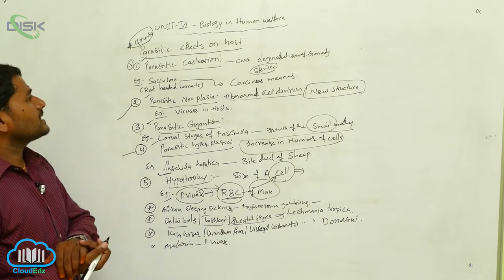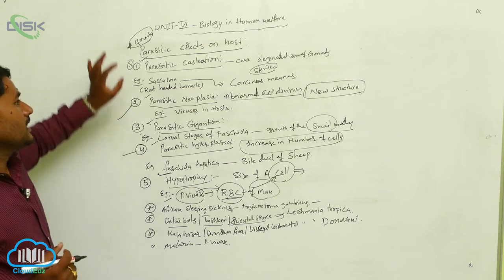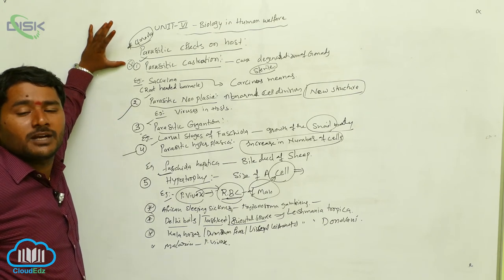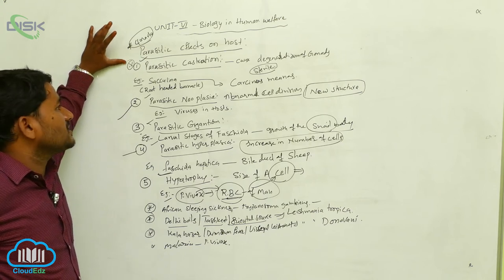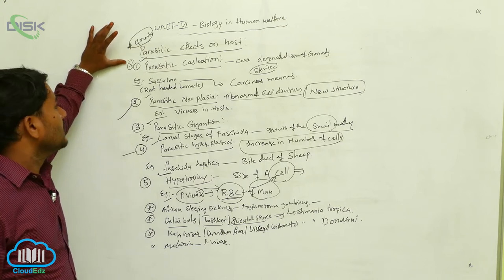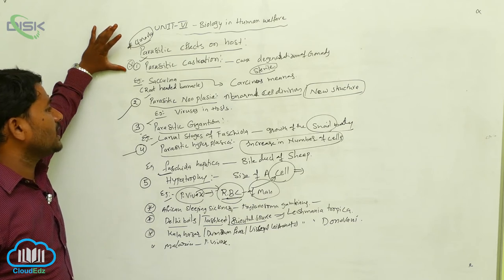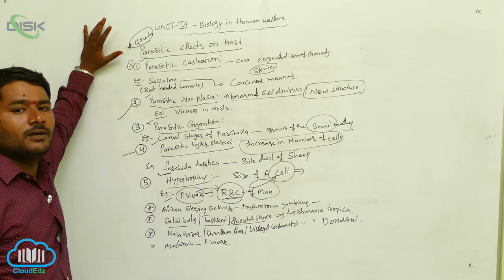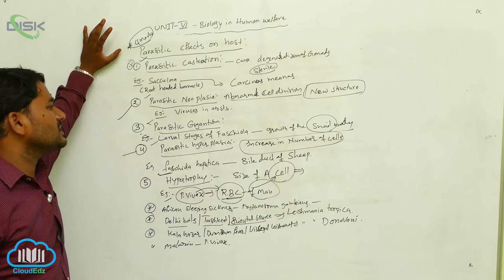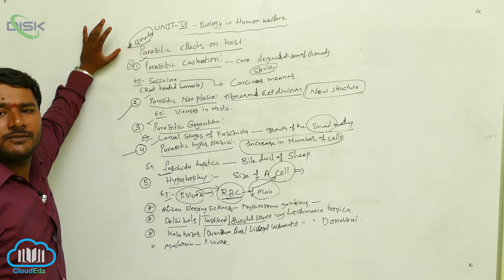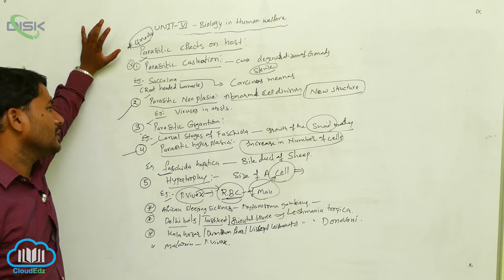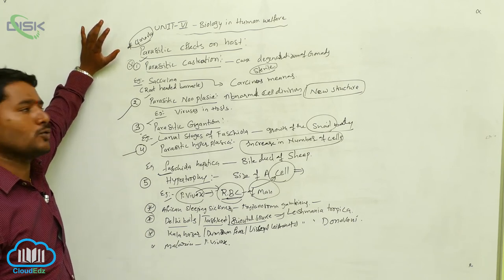Some parasites cause degeneration of the gonads in the host, making the host sterile — this is called parasitic castration. For example, Sacculina, a root-headed barnacle, causes damage to the female gonads in the crab Carcinus, making it sterile. Parasitic neoplasia means some parasitic infections cause abnormal division of cells, forming new structures in the host's body. For example, viruses cause tumour formation in the host.